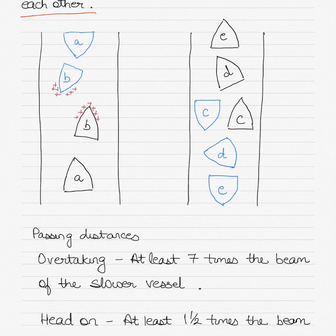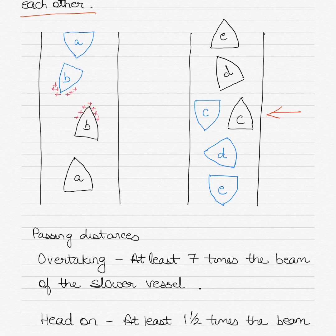In the diagram, one vessel is shown in black and the other in blue, meeting in a head-on situation. At position C, when they are abeam, a hard-over towards each other should be given so that the stern of each vessel clears the other and there is no stern attraction leading to a collision.